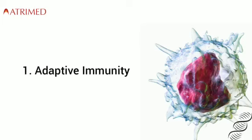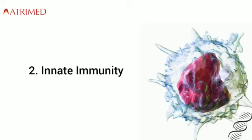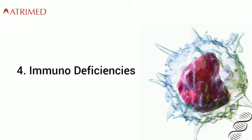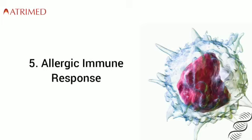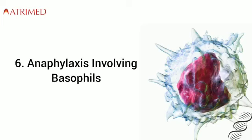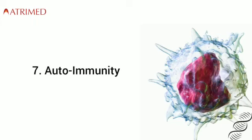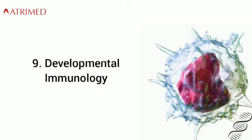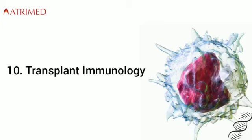Immunology is a subject which involves: 1. Adaptive immunity through natural exposure or vaccination. 2. Innate immunity, which is generalized to any invading pathogen. 3. Infection-specific immune response — that is, how the body reacts to viruses, bacteria, or mycobacteria like tuberculosis. 4. Immunodeficiencies. 5. Allergic immune response, where there is an exaggerated immune response. 6. Anaphylaxis, involving basophils. 7. Autoimmunity, which means a misdirected immune response to our own cells. 8. Cancer immunology, where certain immune checkpoints can be unleashed to kill cancer cells. 9. Developmental immunology, which includes genetics. And lastly, 10. Transplant immunology, which involves graft versus host rejection.